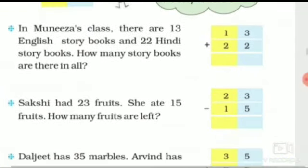Now let's see the next sum. In Muneza's class there are 13 English story books and 22 Hindi story books. Muneza ki class mein English story books kitni thi? 13. And 22 Hindi story books — Hindi story books thi 22. How many story books are there in all? Total mila kar kitni story books thi?